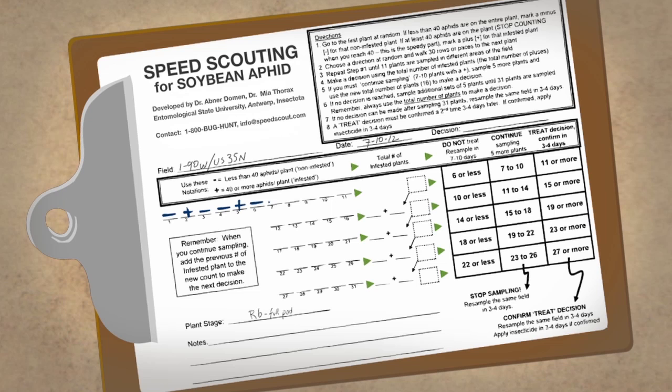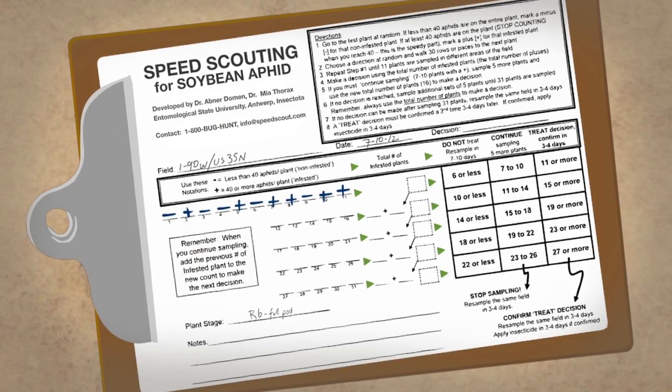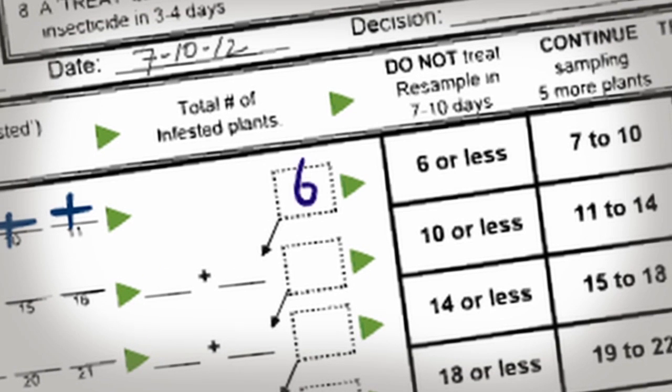Next, repeat step 1 until 11 plants are sampled in different areas of the field. Then, make a decision using the total number of infested plants, or pluses.